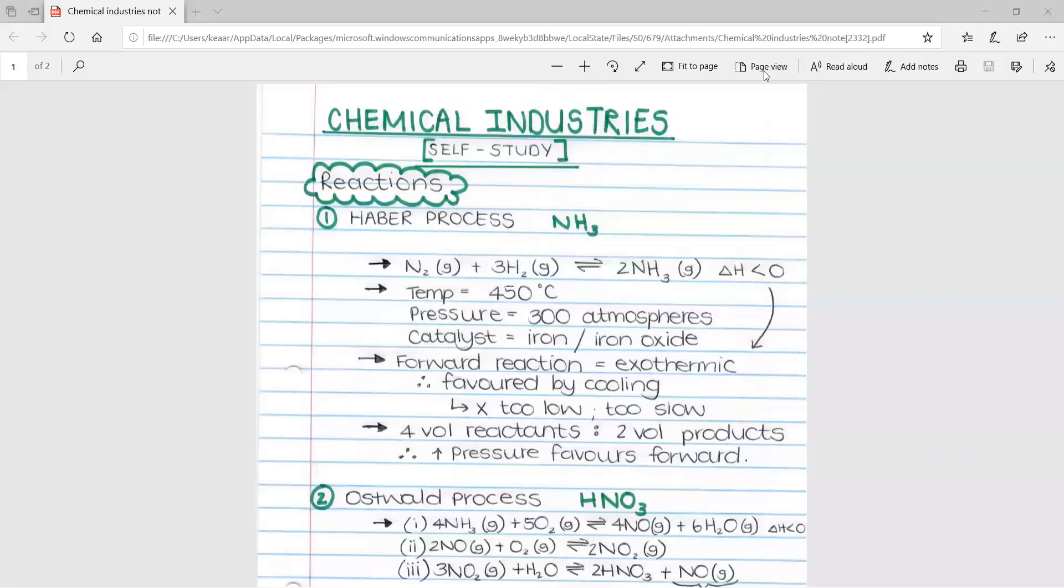This video is going to cover chemical industries, which is also known as the fertilizer industry. There are different names for this section. This is generally a self-study section and it appears in your exam paper two. So your chemistry exam, it's generally the last question. It's roughly about 10 marks.